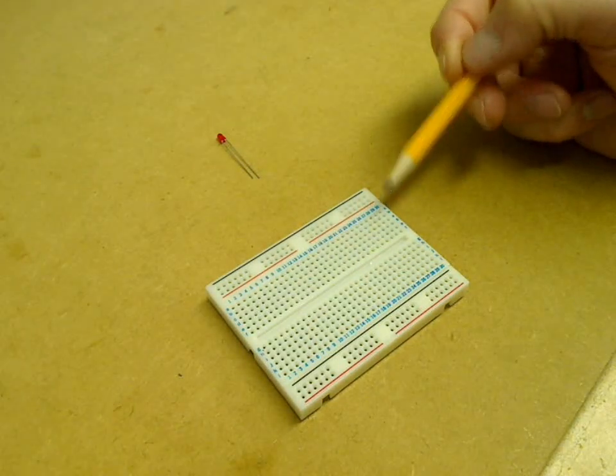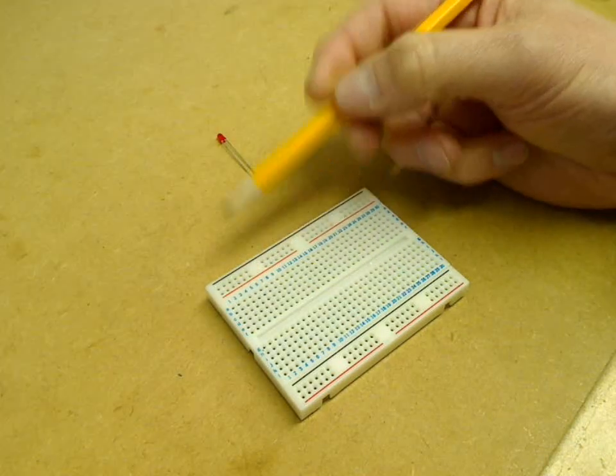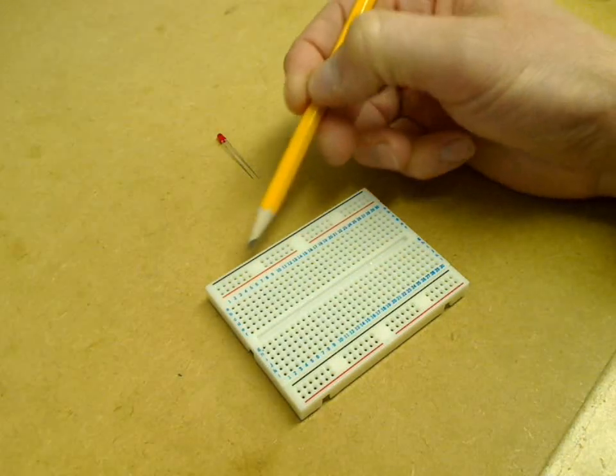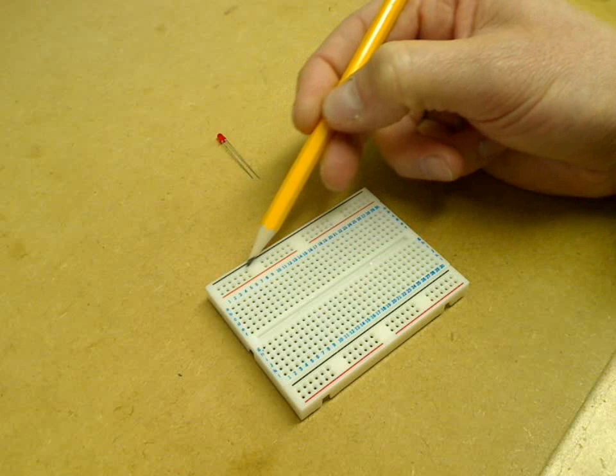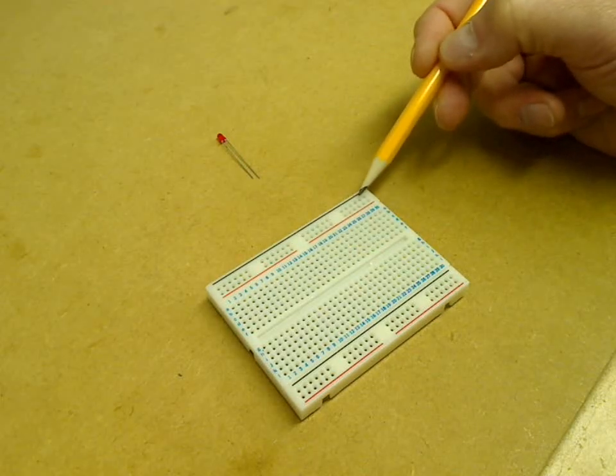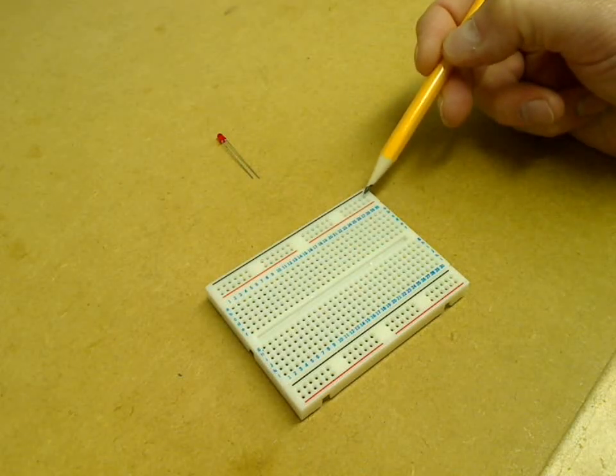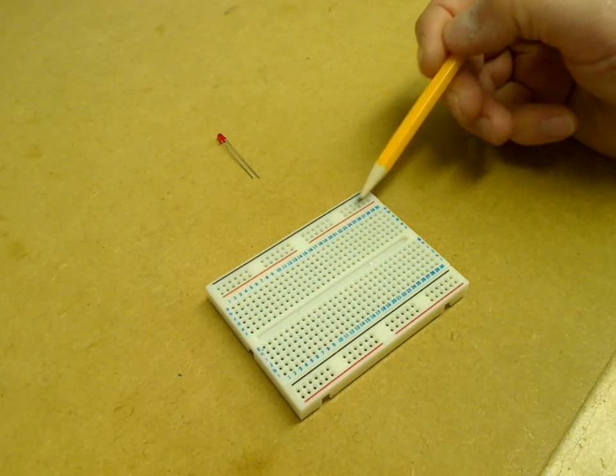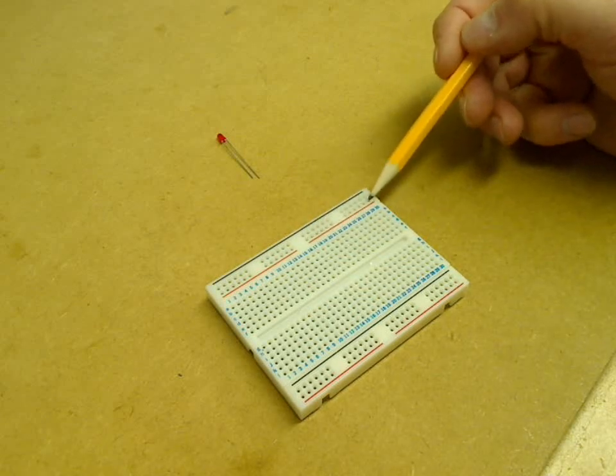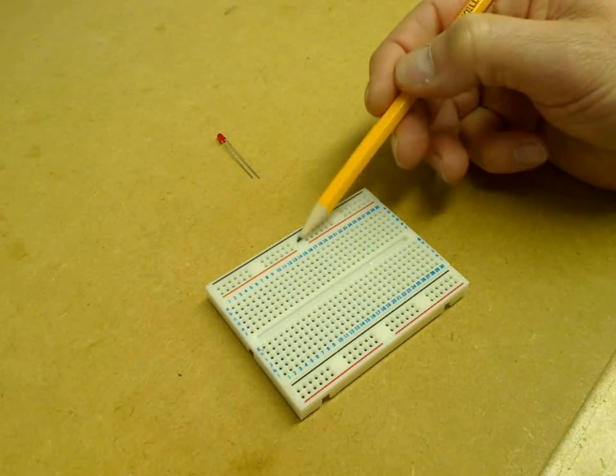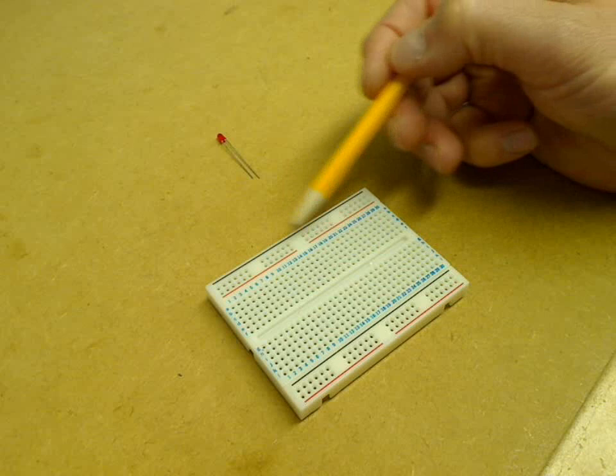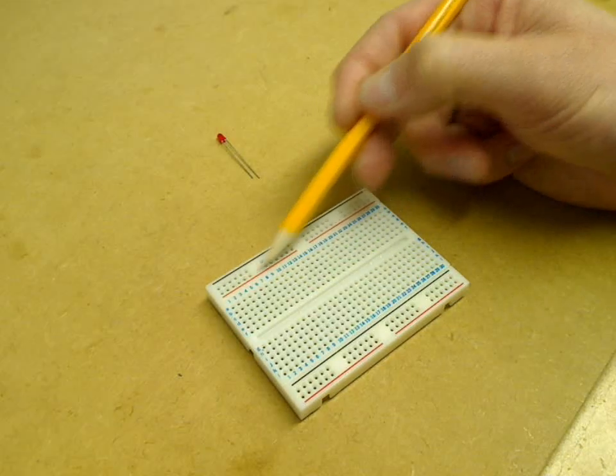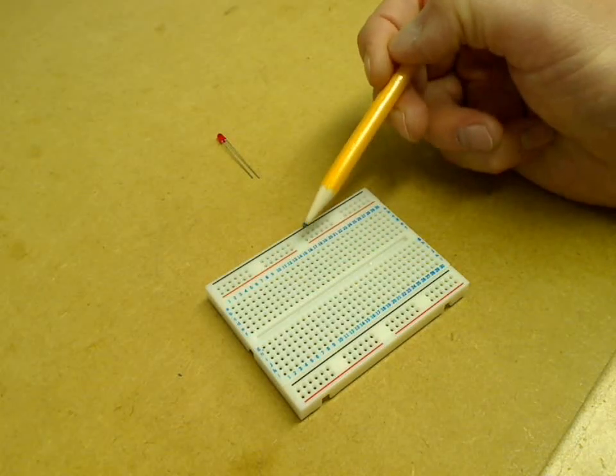Now you'll notice that the black line is continuous, and that's because all of this row of holes are joined together. The manufacturers expect that you'll use that as the ground line or zero volts. The red line represents holes that are joined together, and you'll notice there's a gap here because this lot of holes is not connected to that lot. The reason for that is that you may want to have different voltages floating around in the circuit.